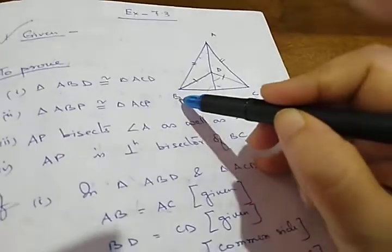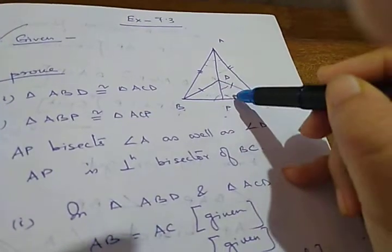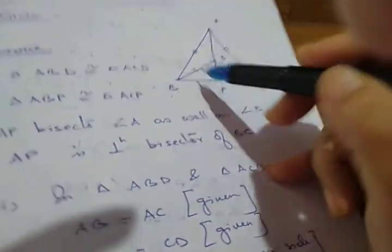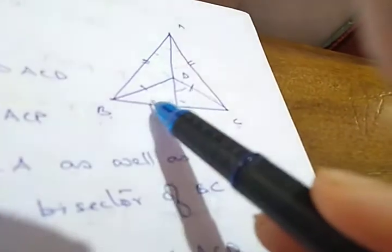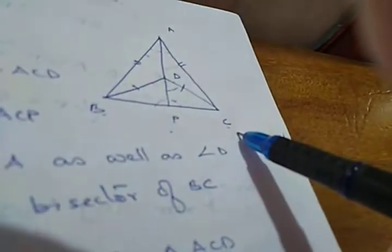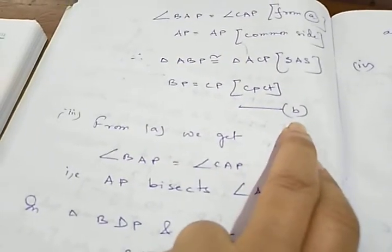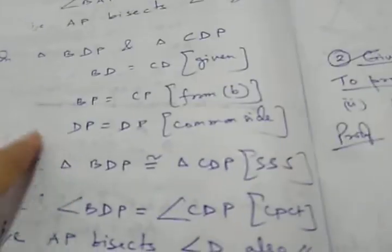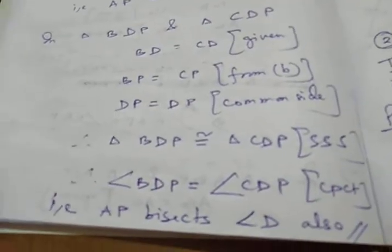Now we are going to prove that AP bisects angle D also. For that we have to prove that angle BDP equals to angle CDP, by proving triangles BDP and CDP are congruent. BD equals to CD is given, DP is the common side, and from proof 2 we have BP equals to CP. Taking these three conditions: BD equals to CD, BP equals to CP, and DP equals to DP as common side. Therefore these two triangles are congruent with the help of side-side-side.